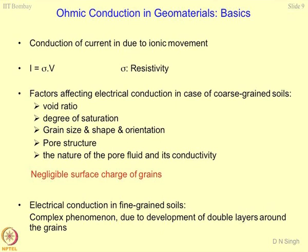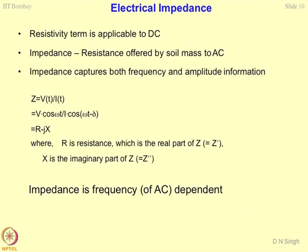What is electrical impedance? When you talk about simple resistivity it always refers to DC measurements: V = I·R, where V is the voltage, I is the current, and R is the resistance. When you talk about impedance, it is nothing but the resistance due to AC — a frequency term gets associated with the resistance. Impedance captures both frequency and amplitude information.